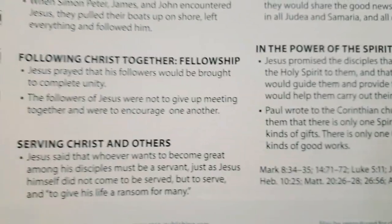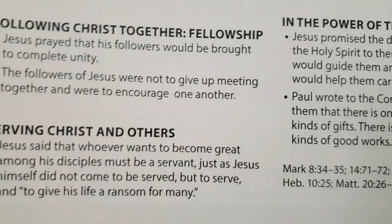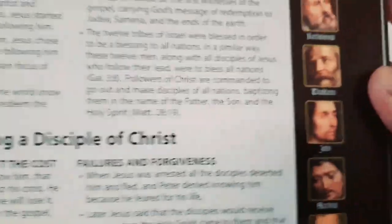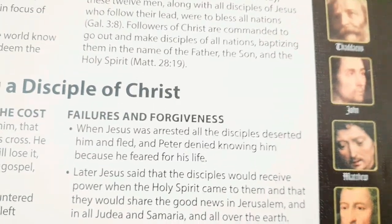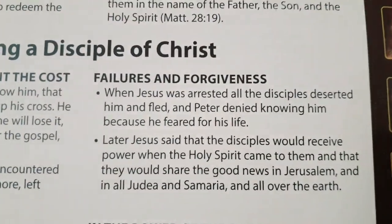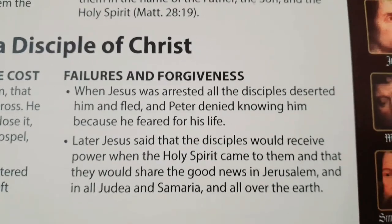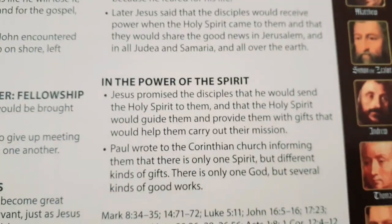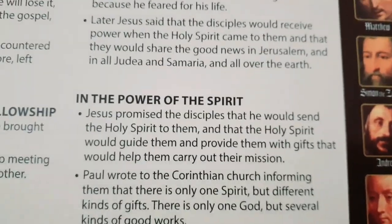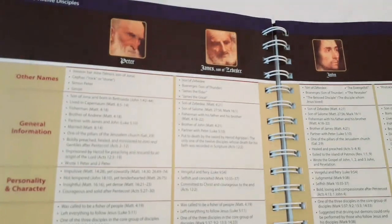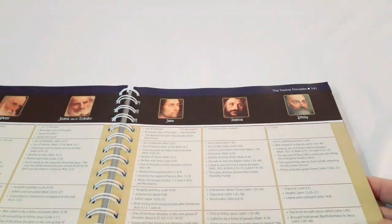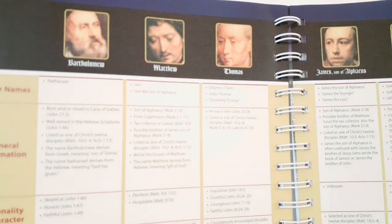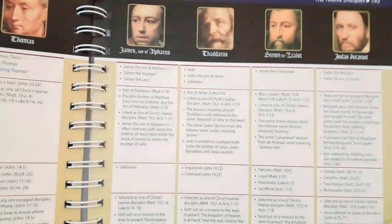It talks about fellowship and unity in the body of Christ — not much of that going around these days. Serving Christ and others: you've got to serve Christ first; you can't put others above Christ. A lot of churches today focus so much on fellowship, but your fellowship must be intimate with the Lord Jesus before it can be given out to others. Failures and forgiveness, and in the power of the Holy Spirit — demonstration of the power of the Holy Spirit. Then it talks about the names of the disciples: Peter, James, John, Andrew, Philip, Bartholomew, Matthew, Thomas, James, Thaddaeus, Simon, and Judas Iscariot.